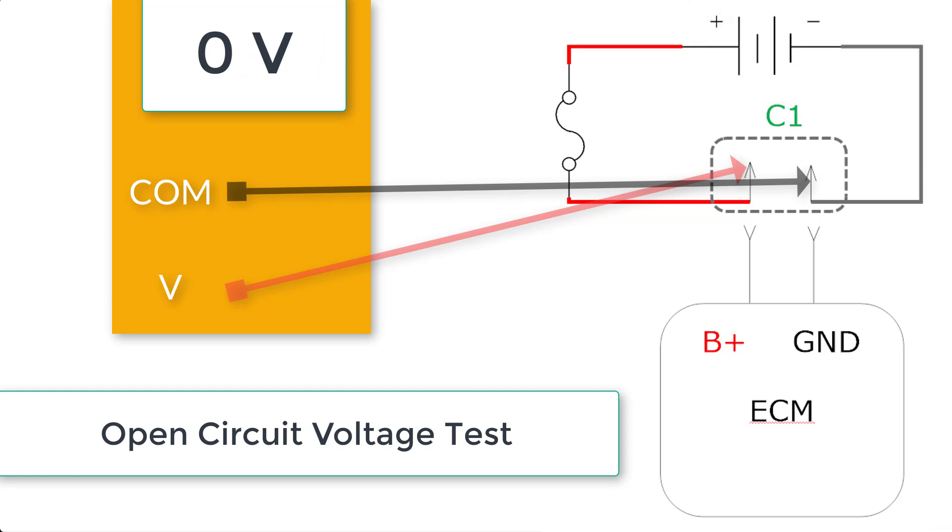If the voltage value was zero in this measurement, then that would indicate that I have an open in either the ground or the power side of the circuit. I would need to independently verify the continuity of the ground side and independently verify the continuity of the power side. We've determined that there is not an open in the power and ground side, so let's see what we do next.